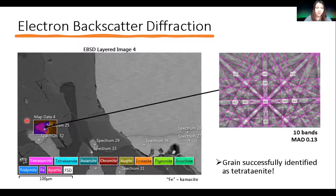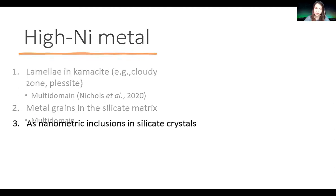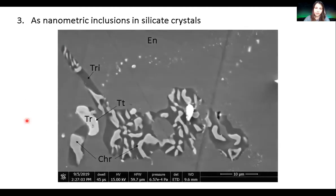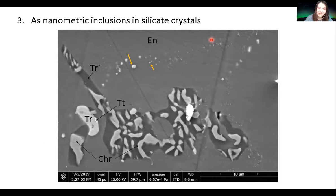These grains are a few tens of microns across generally — still not small enough. So I went even smaller. It turns out there are some nanometric inclusions of sulfide and metal in some silicate crystals. Here is a mineral intergrowth between chromite and tridymite in an enstatite host — really interesting, but no time to discuss. What I want to talk about is these inclusion trails: the majority are sulfide, but some are metal and some are small enough and high-nickel enough to potentially be tetrataenite.